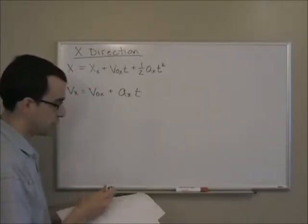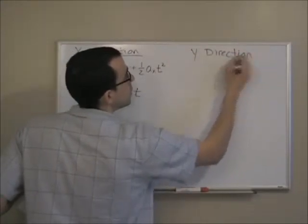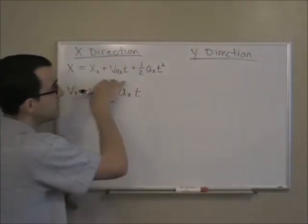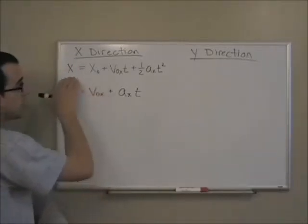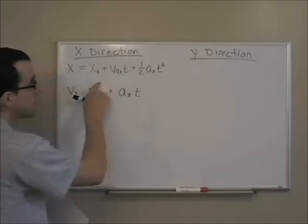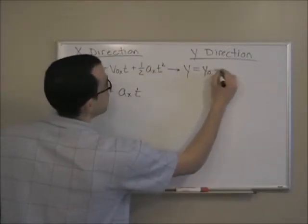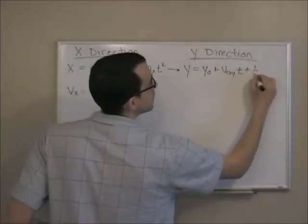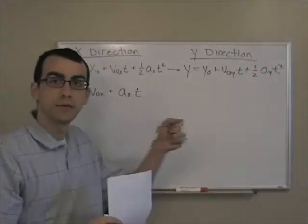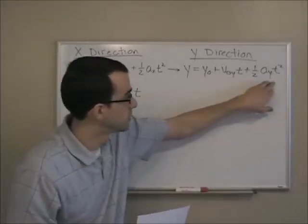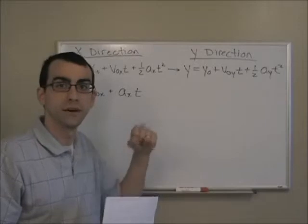I can apply these same equations to the y direction. As I applied these for the x direction, I was completely ignoring the fact that the object was traveling up and down — I was just focusing on it traveling from left to right. If I rewrite these for the y direction, it looks exactly the same except I replace all the x's with y's. So if I wanted to know the y position of the object as it traveled through space, I could use this equation, completely ignoring the left-to-right motion and solely focusing on the up and down.